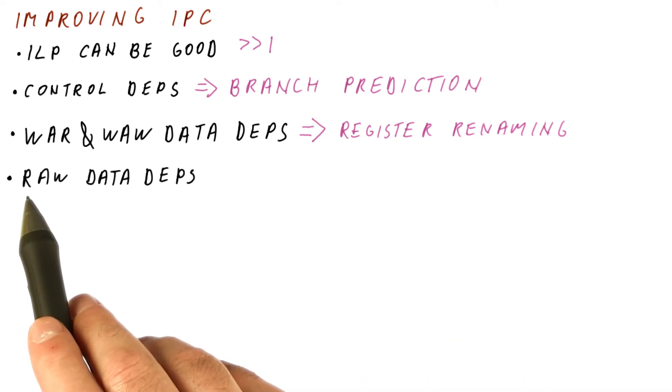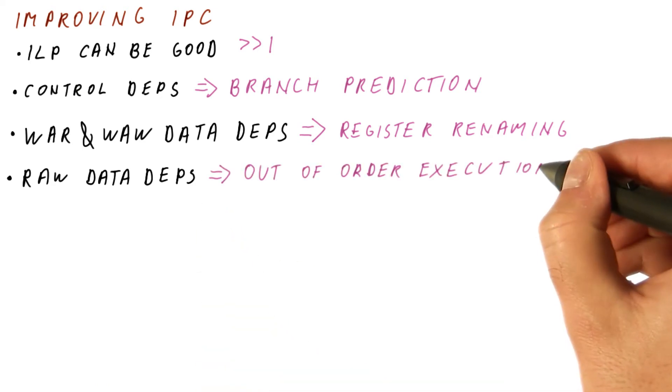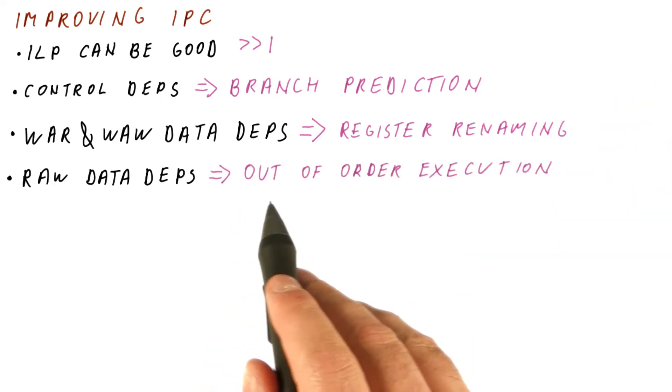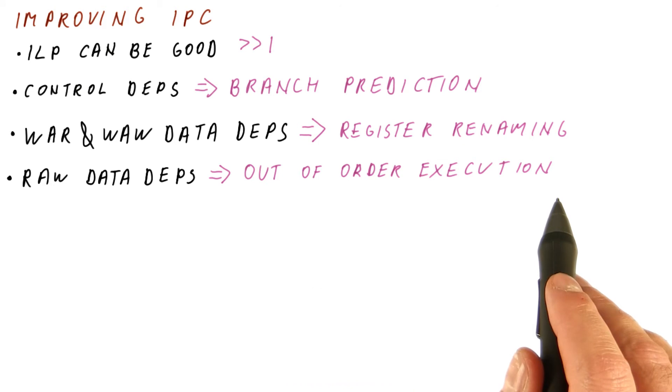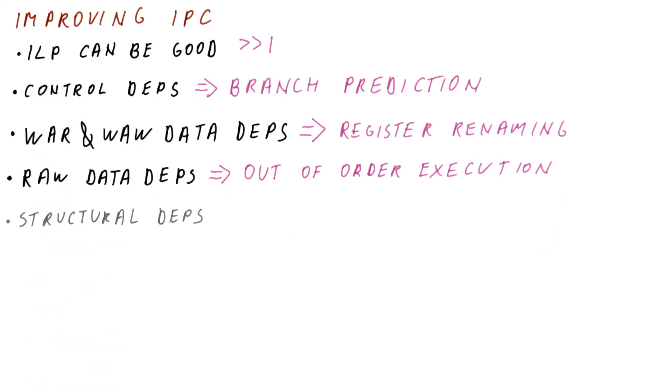And then we have seen that there are these read-after-write, also known as true data dependencies. And we have seen that it helps a lot when you can execute instructions out of order, meaning you don't strictly follow the program order. You simply find instructions whose inputs are ready and you execute them then. That is how ILP mostly was good.